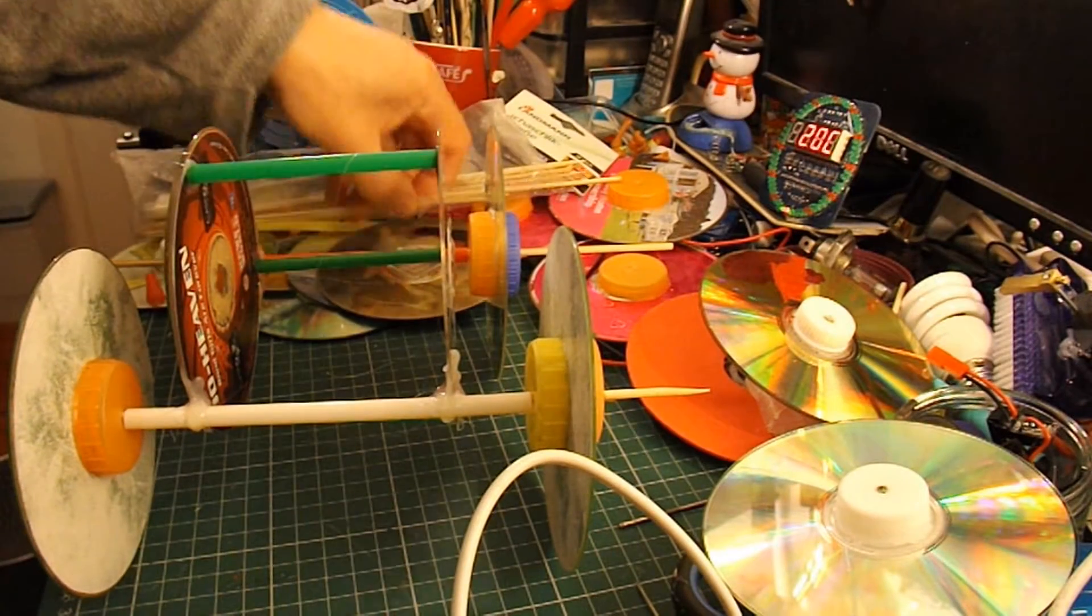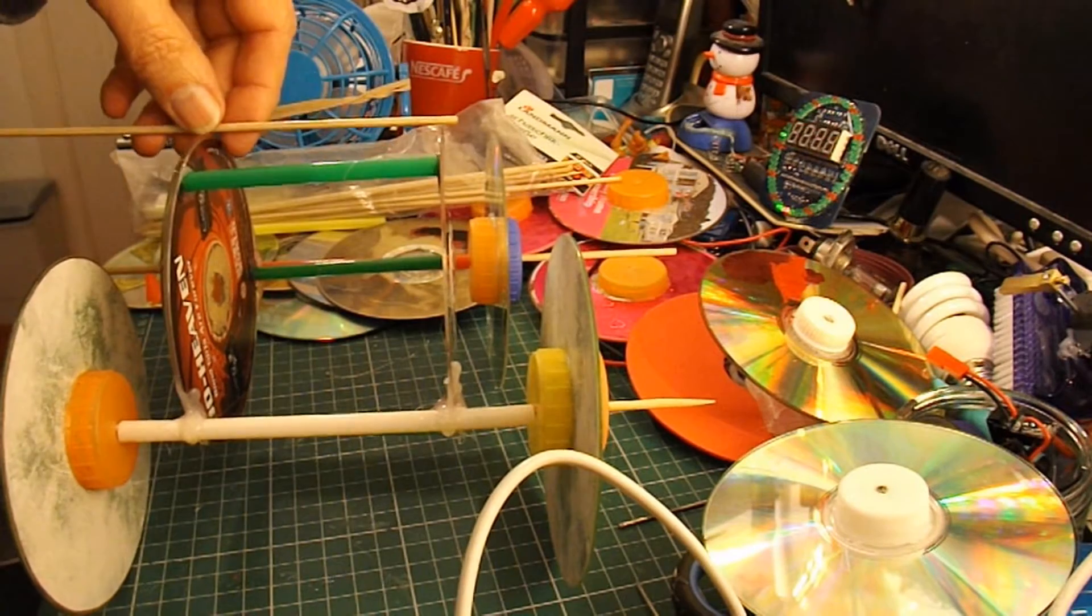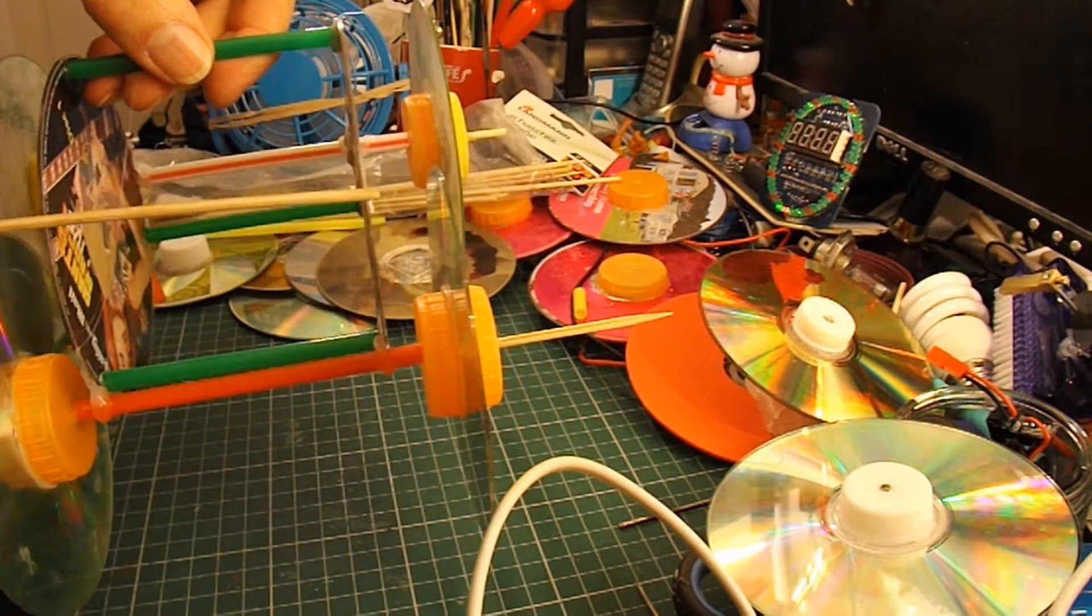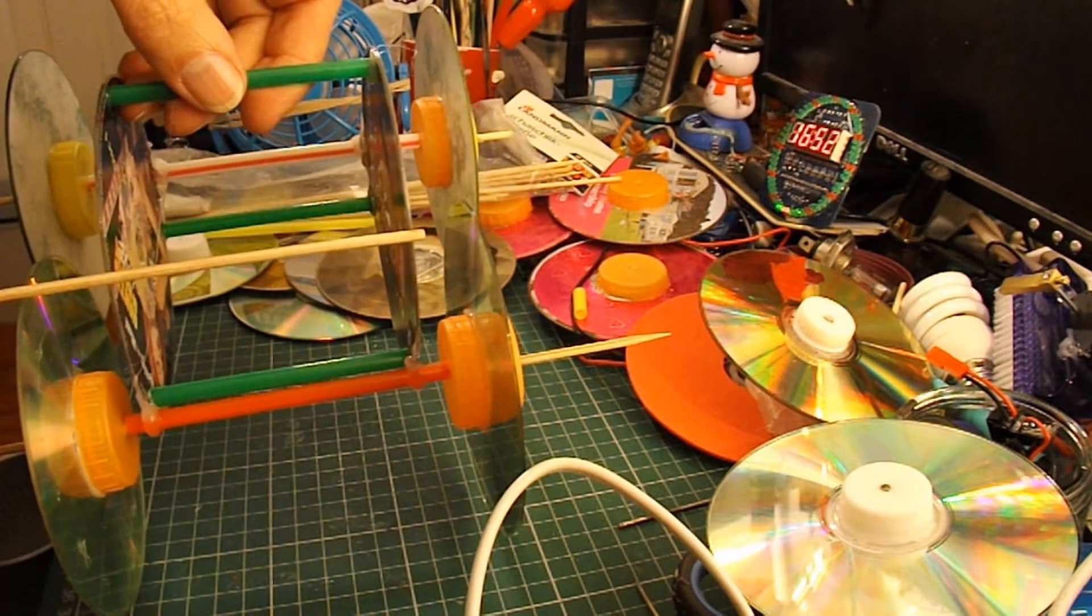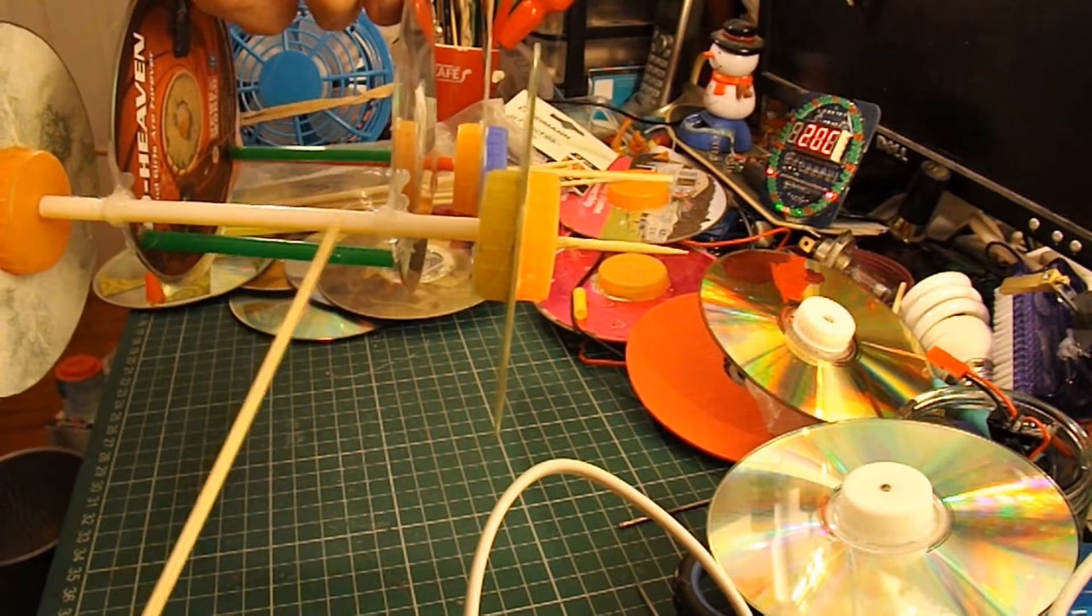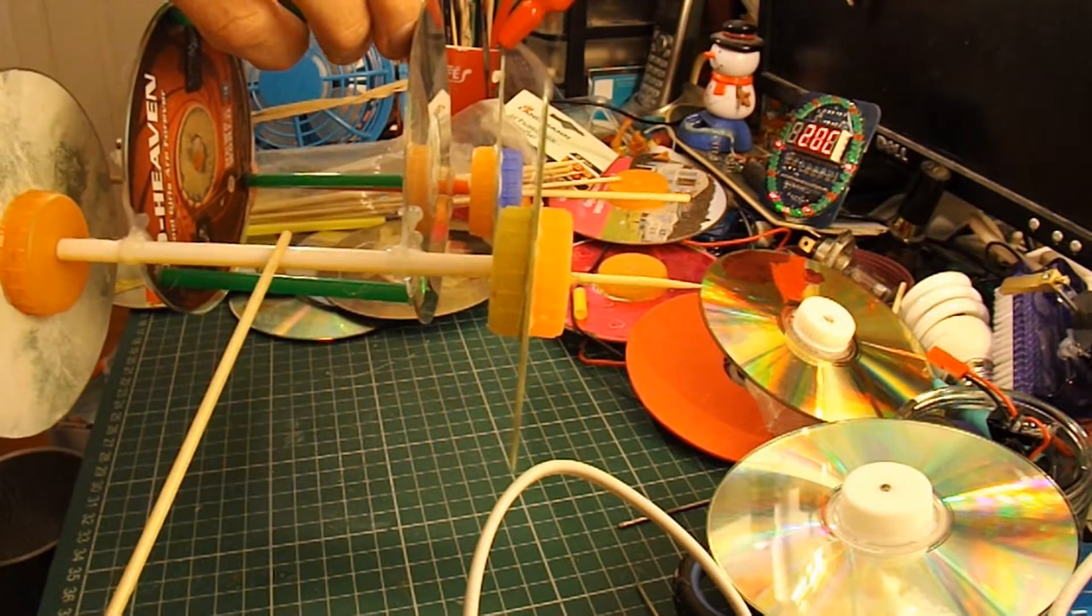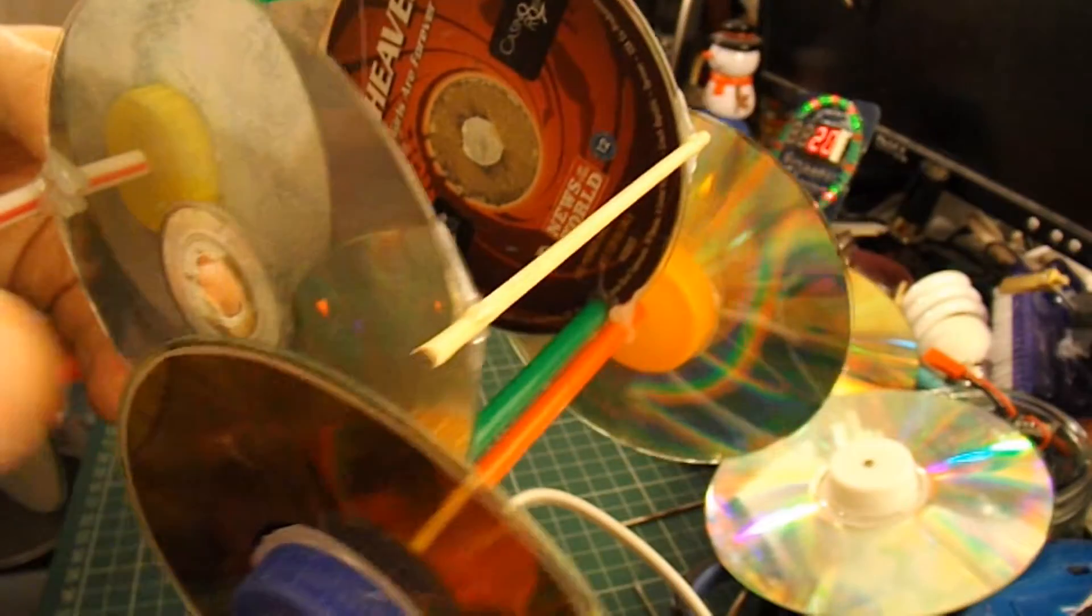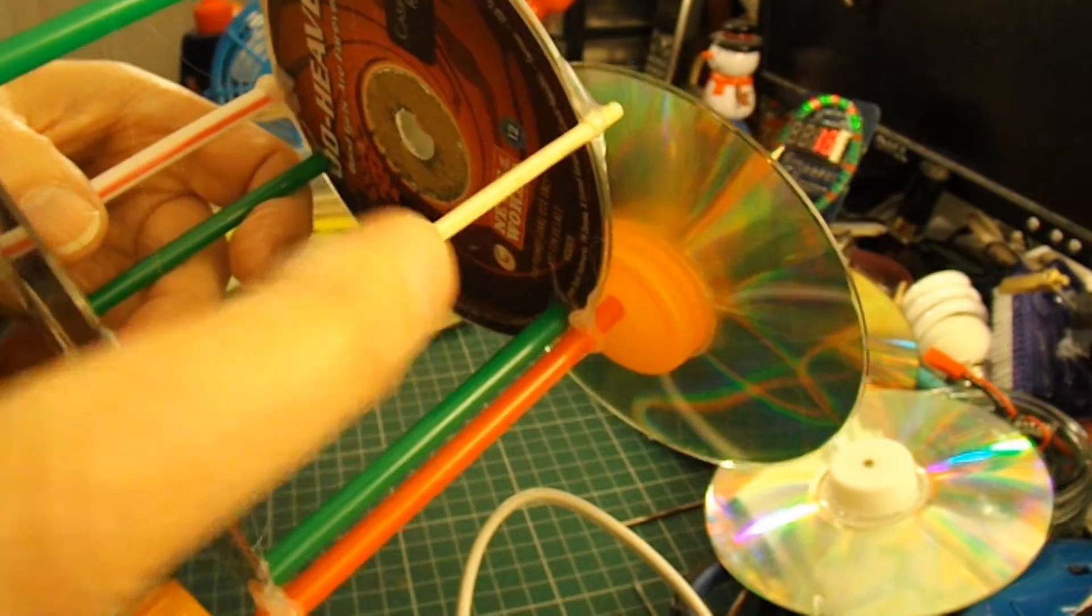What we need now is a bit of barbecue skewer across the front here for the rubber band to go on. That's the barbecue skewer across the front to anchor the rubber band at the front of the car.